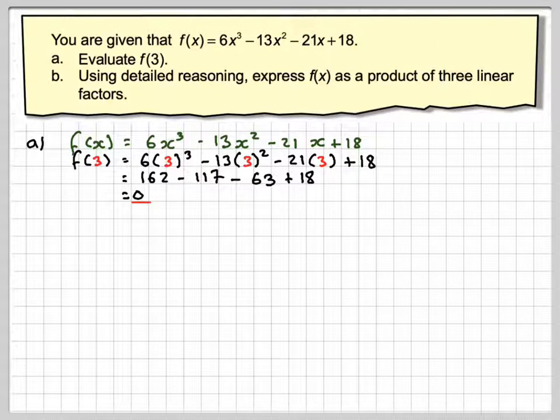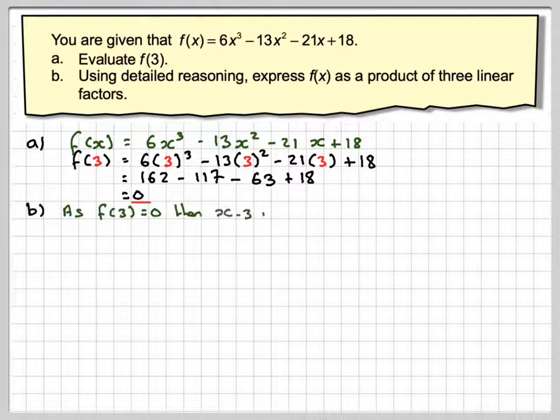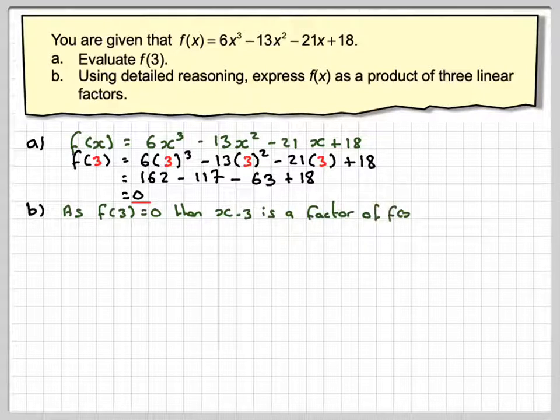So now we're going to express this as a product of three linear factors. Because f of 3 is equal to 0, it means that x minus 3 is a factor using the remainder theorem.